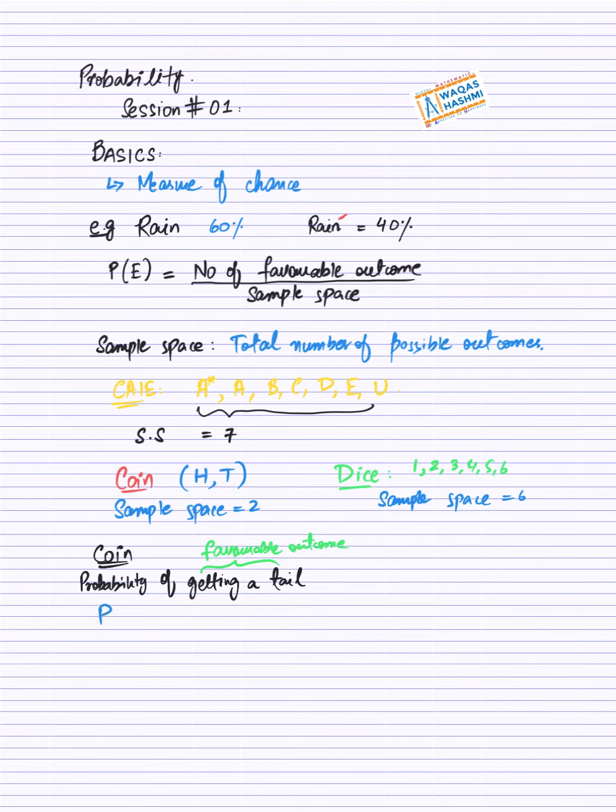Formula likh dete hai, probability of event, event kya hai, mera tail hona. Ab tail hone ke chances kya hai? Bhai, ye coin mein, tail hone ka chance ek hota hai. Toh tail hone ke chances, meray paas one hoonge, out of total number of chances two hai. Toh ye meray paas, tail ki probability hai, one over two.